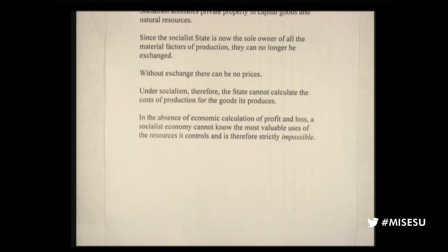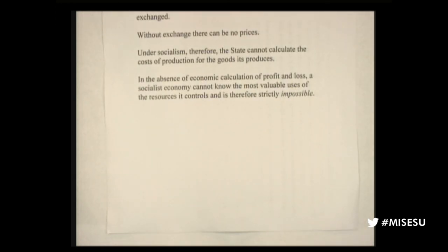The argument is exceedingly simple but devastating: without exchange there can be no prices, and without prices the state cannot calculate the cost of production of the goods it produces. Without cost of production you can never figure out profit or loss, what goods are more valuable, or what resources are more valuable in what uses. Therefore, strictly speaking, a socialist economy is impossible in the sense that there is no way to rationally allocate resources. This is why the Soviet Union and its satellites economically collapsed.